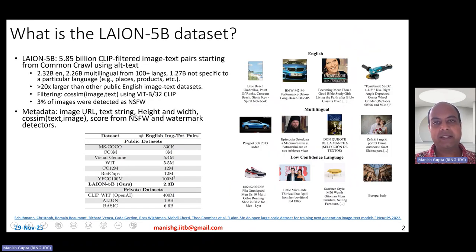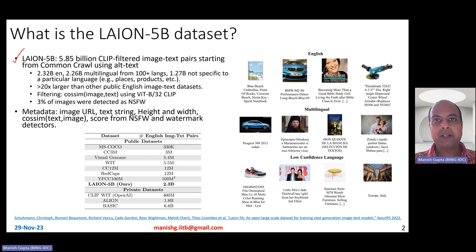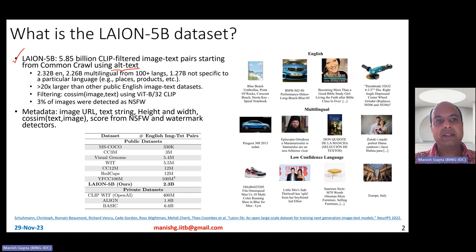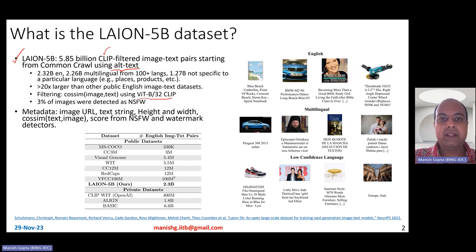What is the LAION 5 billion dataset? As the name says, it basically contains about 5.85 billion image-text pairs. These image-text pairs have been obtained using the Common Crawl corpus, specifically by downloading web pages and extracting images using the IMG tag and extracting the caption using the alt text. These pairs were filtered using the CLIP model, specifically the ViT-B/32 CLIP model, based on cosine similarity between the image and the text obtained from CLIP embeddings.